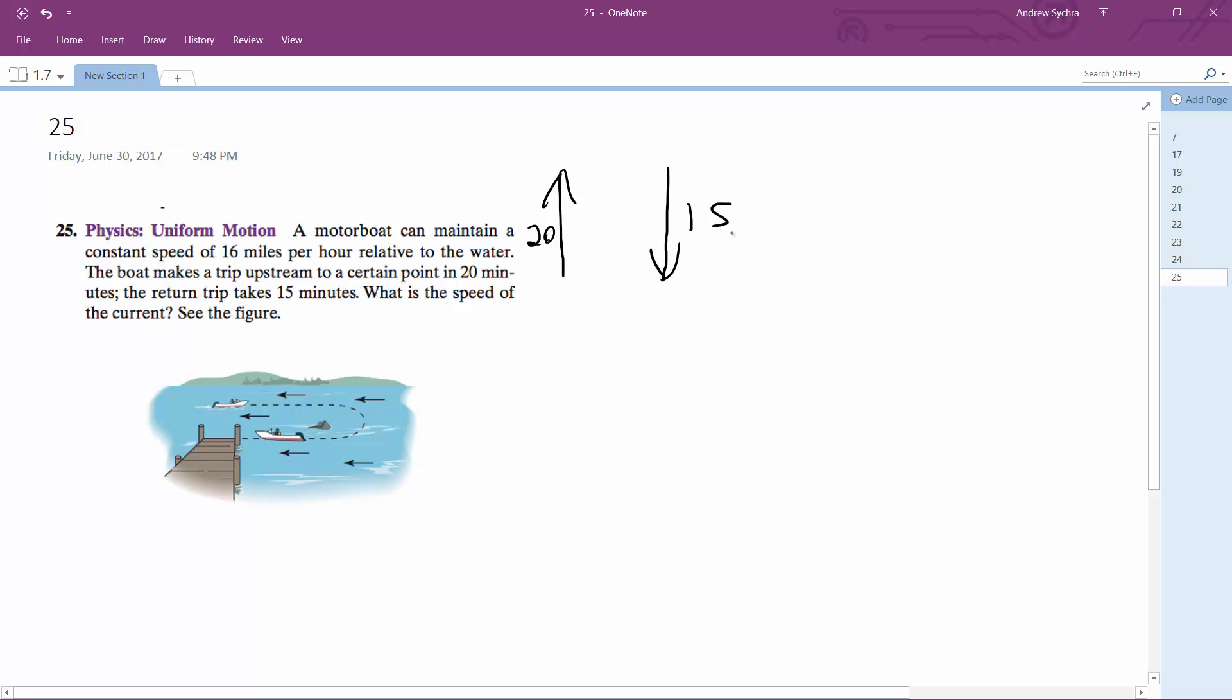The motorboat can maintain 16 miles an hour relative to the water. That means no matter what speed the water is going, it's relative to the water, not the land. In this case, the boat's going 16 miles an hour no matter what.